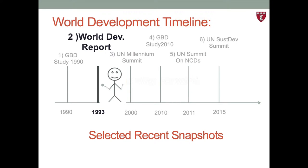Each year the World Bank releases the World Development Report, a summary of the economic, social, and developmental status of the globe. The findings from the Global Burden of Disease 1990 study were released in the 1993 World Development Report. This report became highly influential because it was among the early data and evidence linking an investment in health to improved economic outcomes, and it introduced new methods for measuring the burden of disease. This was the first World Development Report with such a strong focus on health.